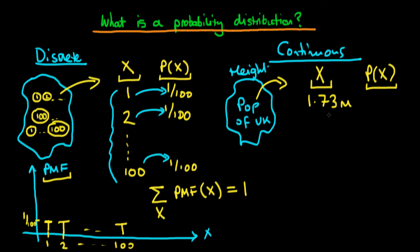This is a tricky question. If 1.73 metres means height to the nearest centimetre, we can assign a probability. But if we mean the exact value of 1.73 metres to an infinite number of decimal places, no one is exactly that height, so we'd have to assign a probability of zero. This reveals a key difference in how probability distributions work for continuous random variables.